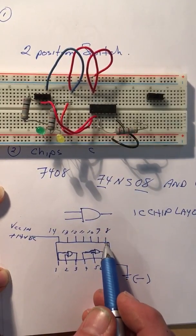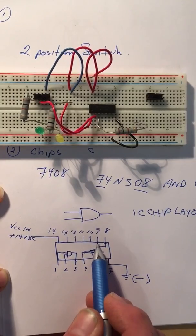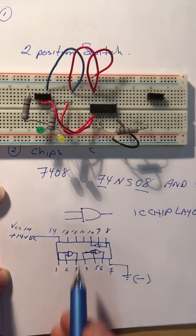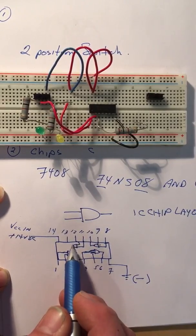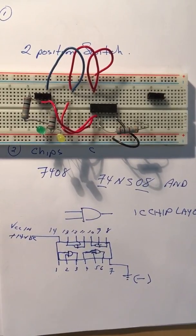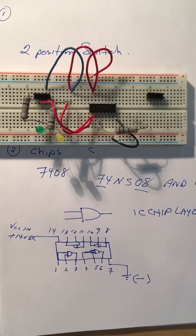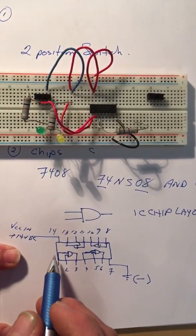And then pin eight, pin nine, those are both inputs and then pin 10 is an output. And then pin 11, pin 12, and then pin 13. So you can see that within this one chip we have four different gates.